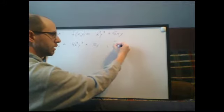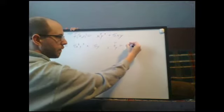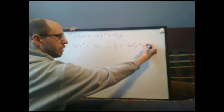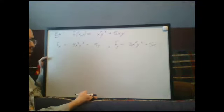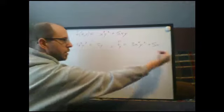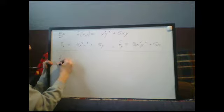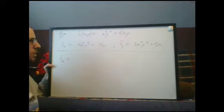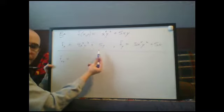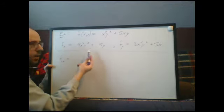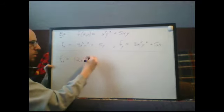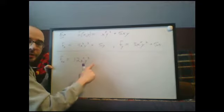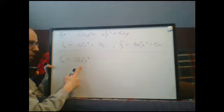For f_y, we treat x as a constant: the derivative of x⁴y³ with respect to y gives 3x⁴y², and the derivative of 5xy gives 5x. So f_y = 3x⁴y² + 5x. Now for the second derivatives: f_xx is the derivative of f_x with respect to x, giving 12x²y³ — the term 5y has no x, so its derivative is zero.